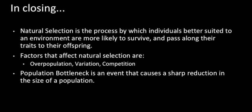In closing, remember that natural selection is a process by which individuals better suited to an environment are more likely to survive, reproduce, and pass on their traits to healthy offspring. The three factors that affect natural selection are overpopulation — too many individuals creating competition for food, resources, and mates — variation within a species that allows certain individuals to be better suited to their environment, and competition. Also remember population bottleneck: an event causing a sharp reduction in population size, where only those best suited survive.